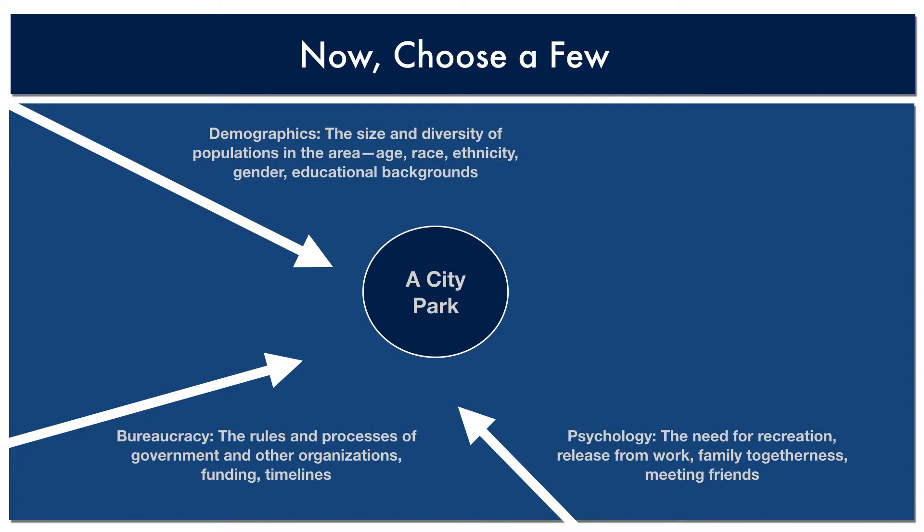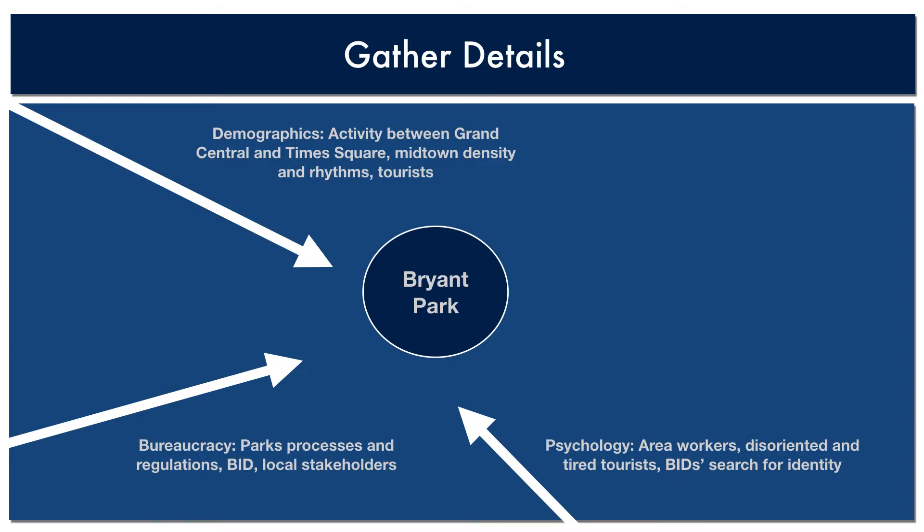Warning: don't try to be comprehensive, not yet. Just give the reader a vision of how a few pieces operate separately and, eventually, together. If we want to describe Bryant Park, for example, we might focus on demographics, psychology, and bureaucracy. Ask yourself: how do these factors play out in the park's design, maintenance, or use? Just pick one of these focuses — one of these foci. Don't try to explain everything.